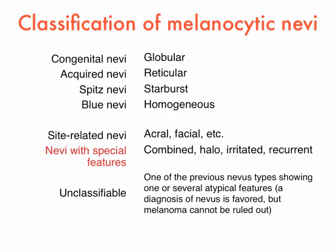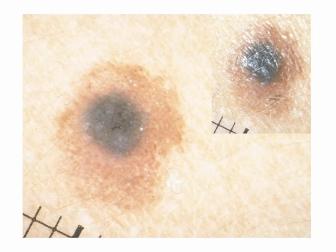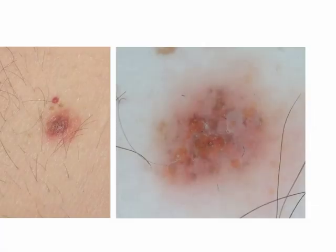The sixth category is represented by NEVA with special features. This group includes combined NEVA, halo NEVA, irritated NEVA, NEVA with eczematous halo, and recurrent NEVA. This is an example of a combined NEVA, defined by the presence of two NEVA cell populations. The most frequent combination is that between a blue NEVA and a globular congenital NEVA, as is the case here. Here is an example of a Meyerson NEVA, or NEVA with eczematous reaction, in which yellowish crusts are visible both clinically and dermoscopically.